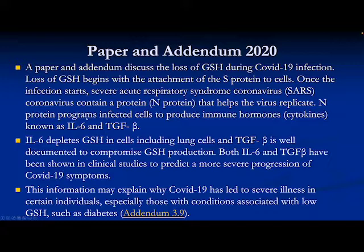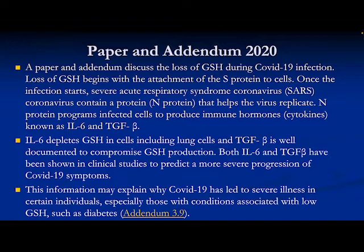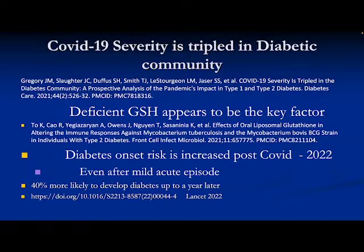There is a paper explaining why IL-6 is important. IL-6 was shown to be elevated in COVID-19 along with transforming growth factor beta (TGF-beta). Both have been shown to deplete glutathione, and both were shown in clinical studies to predict more severe progression of COVID-19. As these cytokines become elevated, glutathione becomes depleted — and studies suggest that depletion of glutathione actually facilitates upregulation of IL-6 and TGF-beta. Glutathione appears to be a key factor in COVID-19.